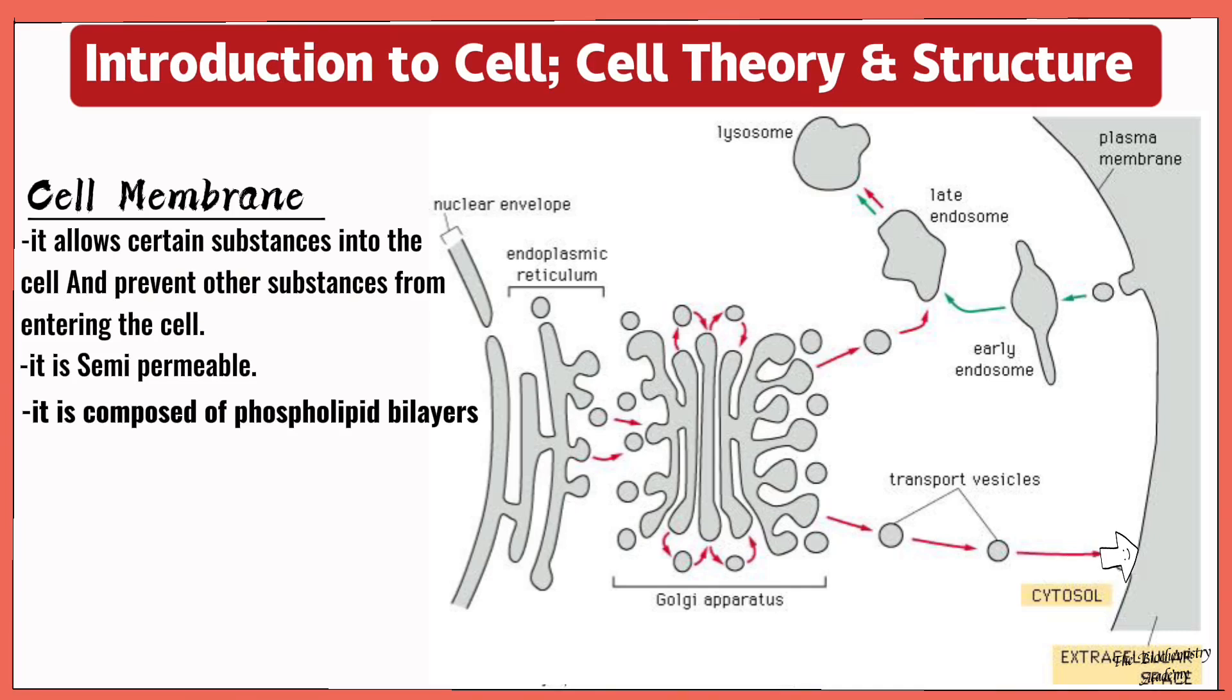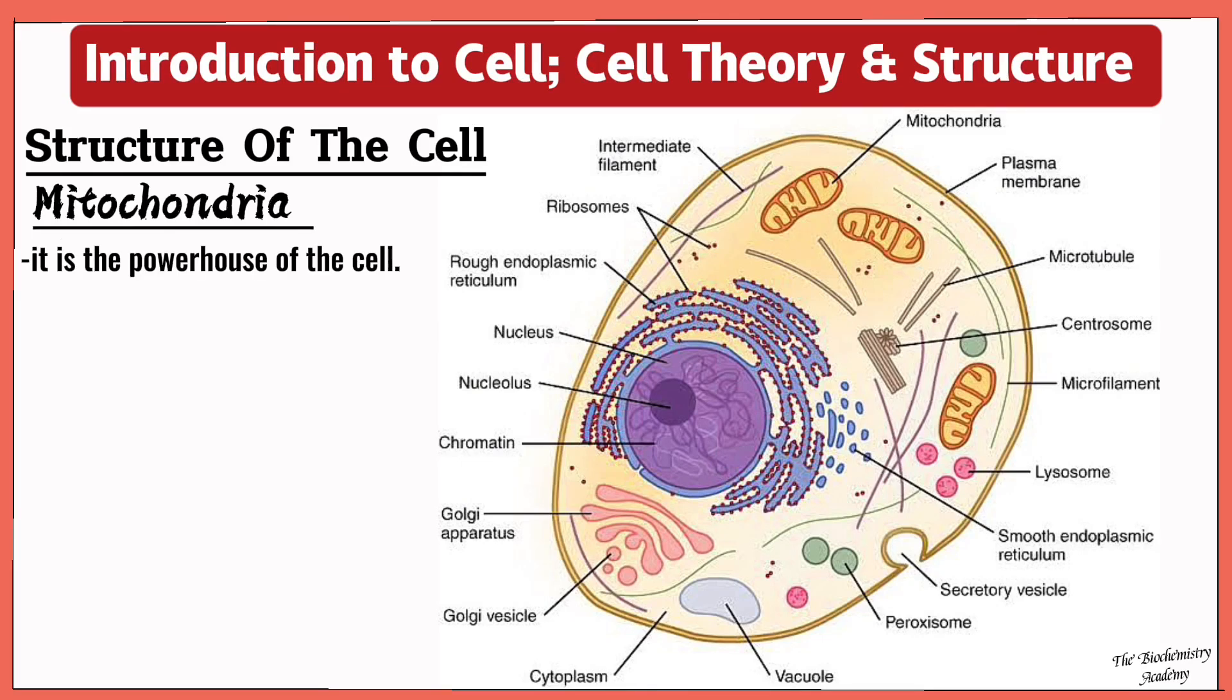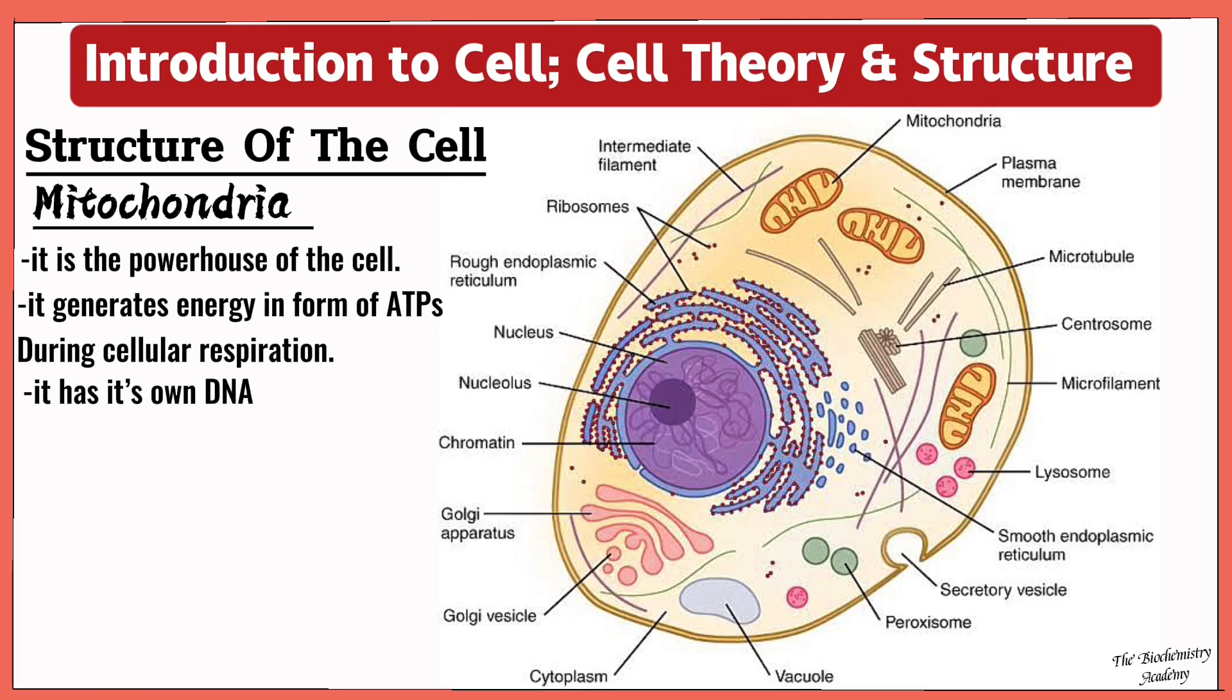Next we'll talk about the mitochondria, which is around this region. The mitochondria is known as the powerhouse of the cell because its job is to generate energy in the form of ATP during cellular respiration. And the mitochondria has its own DNA.